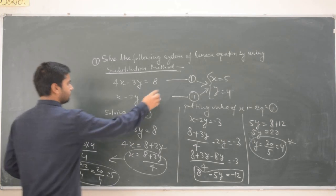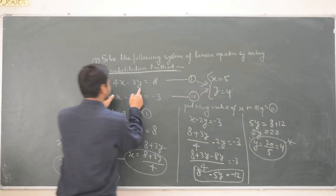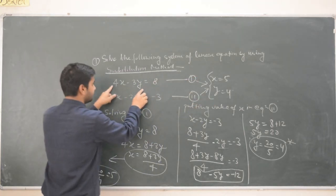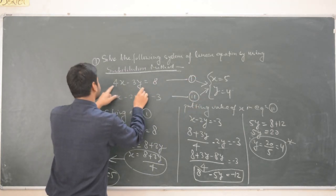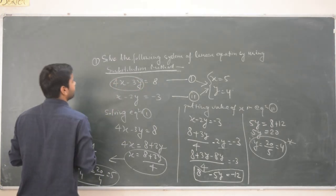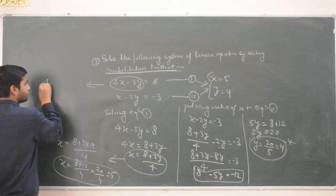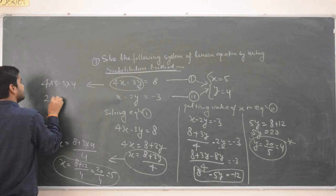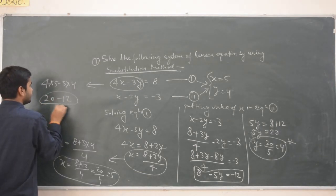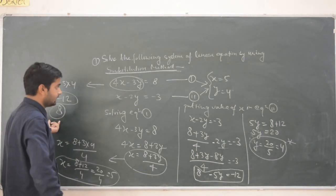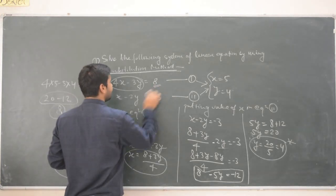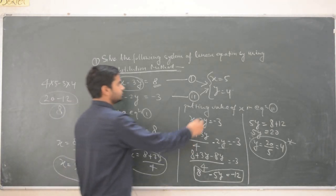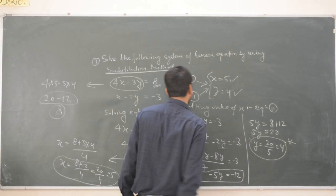We can check our answer by putting x equal to 5 and y equal to 4 back into equation one: 4 times 5 minus 3 times 4 equals 20 minus 12 equals 8. The left-hand side equals 8 and the right-hand side is 8, so our solution is correct. x equal to 5 and y equal to 4 is the verified solution.